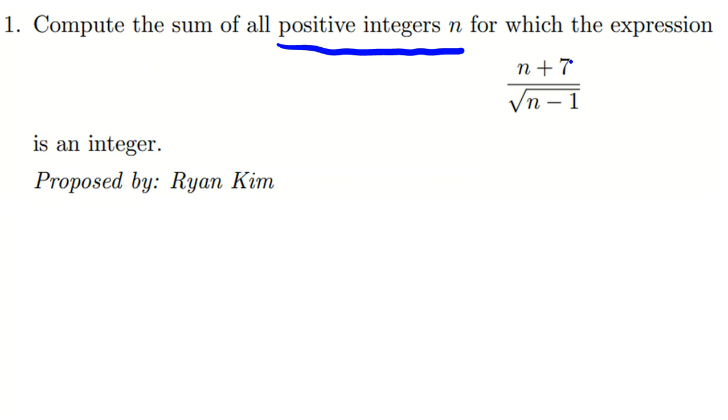So denominator also should be integer because it says the whole part should be integer. So we can conclude root (n - 1) should be integer. So n minus 1 should be a perfect square and we can say okay n is what, x squared plus 1.